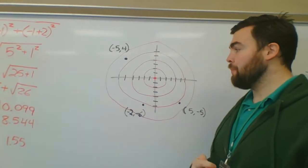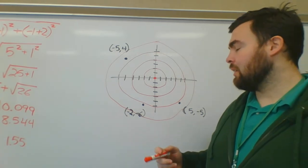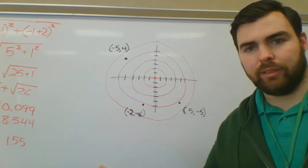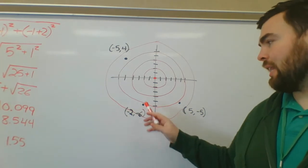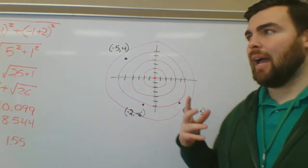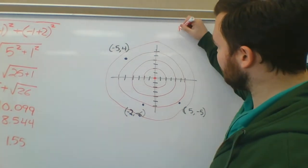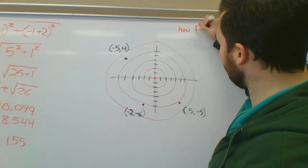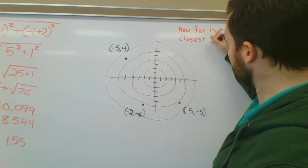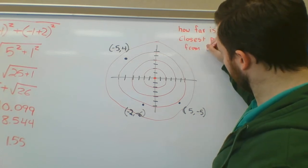Let's move on to the next problem. There's a dartboard with a bullseye. Someone throws three darts and they land at three different points — not close to the bullseye. The question is: how far is the closest point from the bullseye?